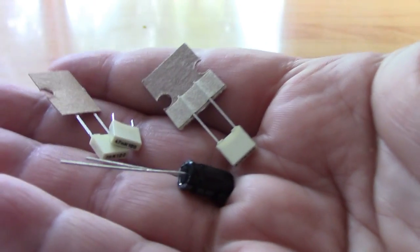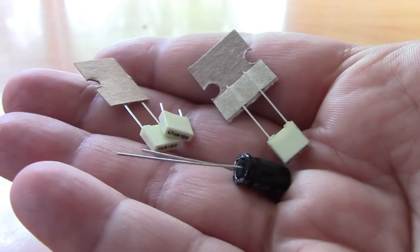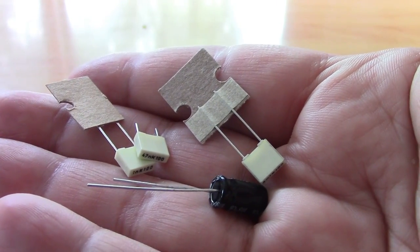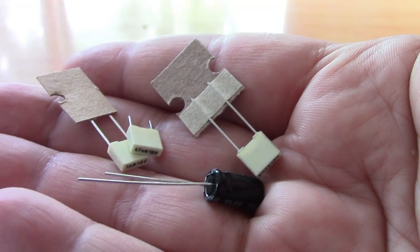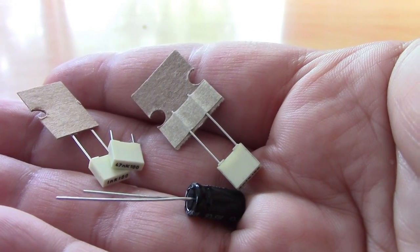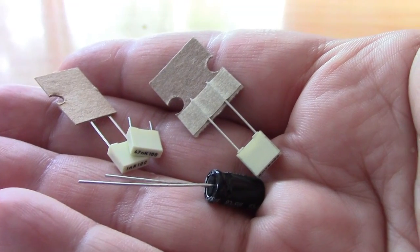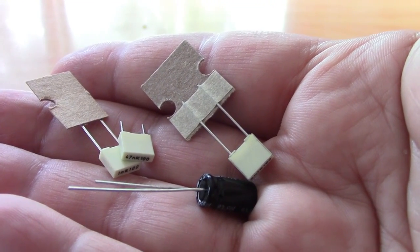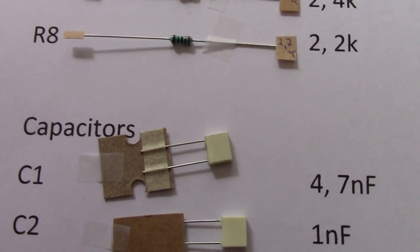The next components to install are the capacitors. The kit comes with two kinds of capacitors. Little square shaped capacitors and one cylindrical capacitor. If you want to get technical, the square capacitors are known as film capacitors, while the cylindrical one is an electrolytic capacitor. In total, there are four capacitors to install on the board.